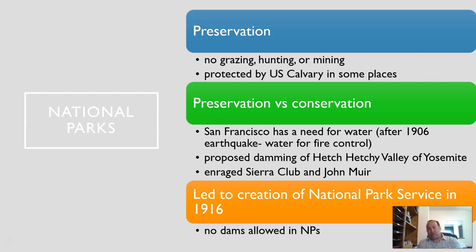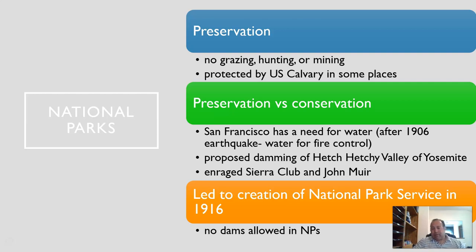So now you have preservation areas in national parks and conservation areas in national forests where you're supposed to be using the resources. This preservation-versus-conservation idea really came to a head after the large earthquake in San Francisco in 1906. The whole town basically burned to the ground, and San Francisco started looking for water sources. They proposed damming the Hetch Hetchy Valley in Yosemite.